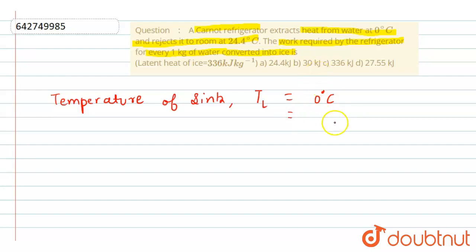So this will be 273 Kelvin. Now temperature of source, we can write the temperature of source. This is higher temperature TH, which is 24.4 degree Celsius. Just add 273 here and we are able to get the answer. So that is 297.4 Kelvin.